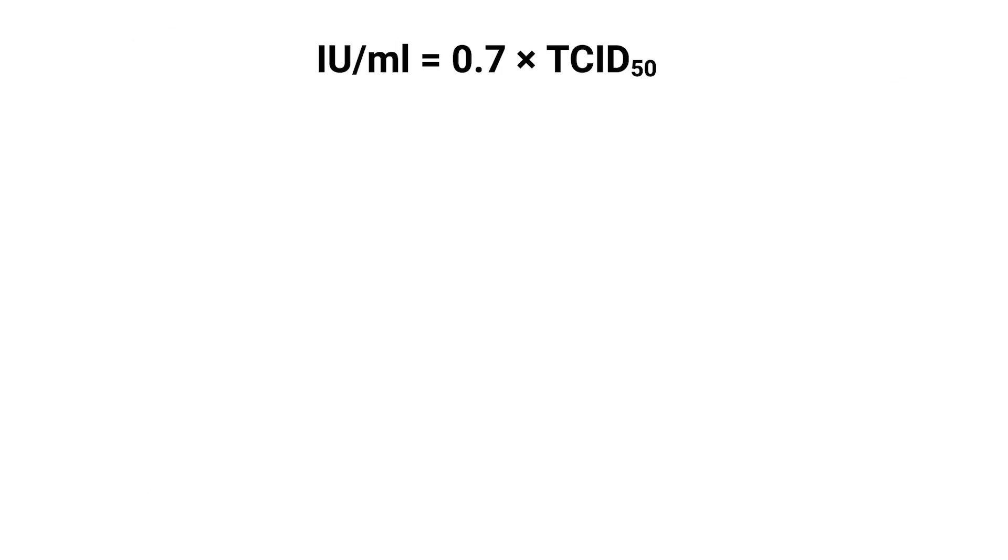So, we've seen why, when converting TCID-50 per milliliter to infectious units per milliliter, we multiply by 0.7.